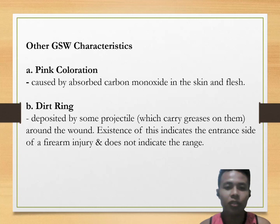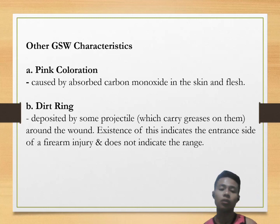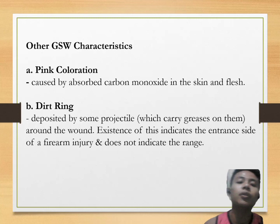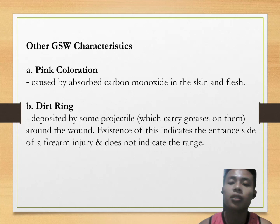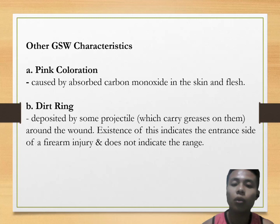Other gunshot wound characteristics include: pink colorization — caused by absorbed carbon monoxide in the skin and flesh; and a dirt ring — deposited by some projectiles which carry grease on them around the wound. The existence of a dirt ring indicates the entrance side of the firearm injury and does not indicate the exit.